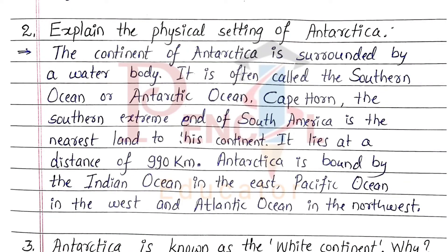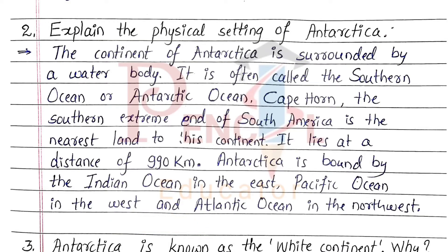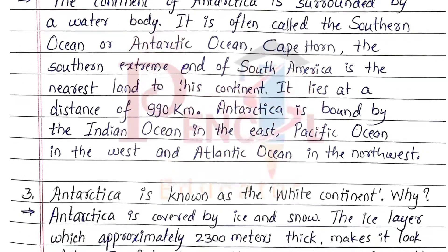2nd Question: Explain the physical setting of Antarctica. The continent of Antarctica is surrounded by a water body, often called the Southern Ocean or Antarctic Ocean. Cape Horn, the southern extreme end of South America, is the nearest land to this continent, lying at a distance of 990 kilometers. Antarctica is bound by the Indian Ocean in the east, Pacific Ocean in the west, and Atlantic Ocean in the northwest.